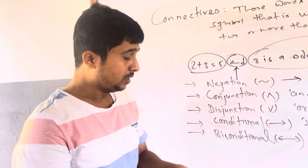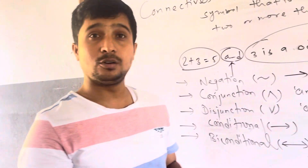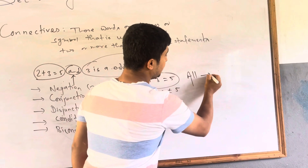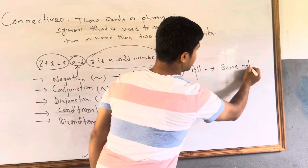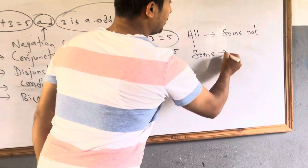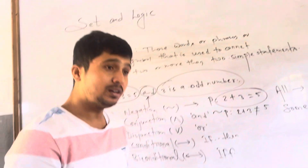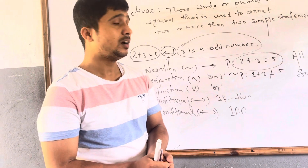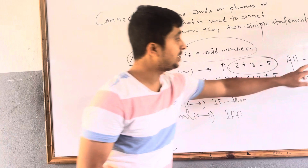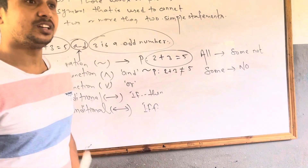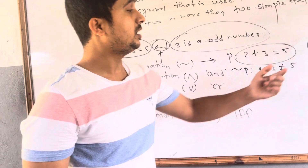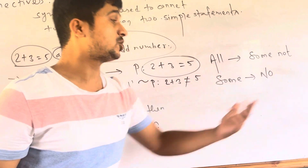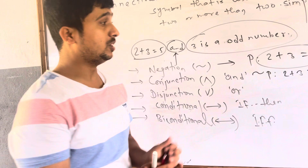Negation simply denies the given statement. If there is an auxiliary verb, we just put 'not'. If 'not' is already there, we remove it. One more rule: if the word 'all' is present, write 'some...not'. If 'some' is present, write 'no'. For example, 'All students are present in this class' becomes 'Some students are not present in this class'. Similarly, 'Some teachers are always present at school' becomes 'No teachers are always present at school'.